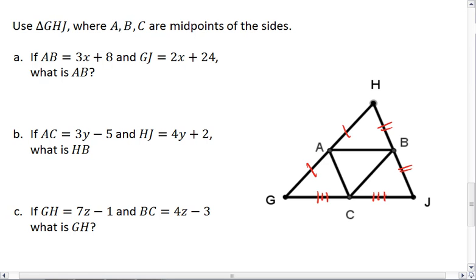We're told if AB is 3X plus 8, and GJ is 2X plus 24, what is AB? If AC is 3Y minus 5, and HJ is 4Y plus 2, what is HB?